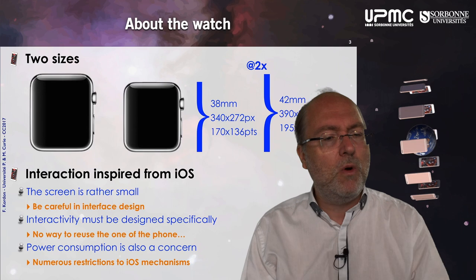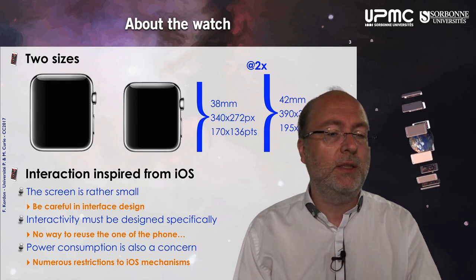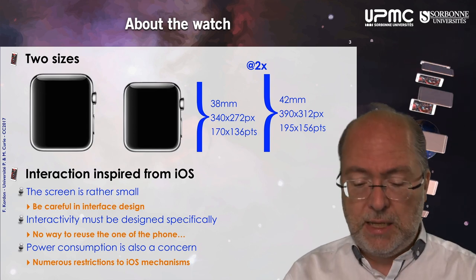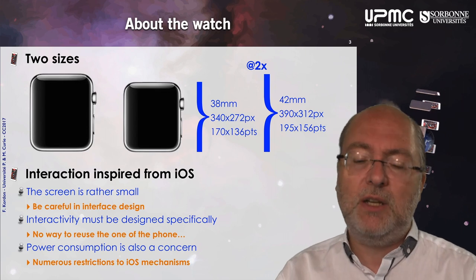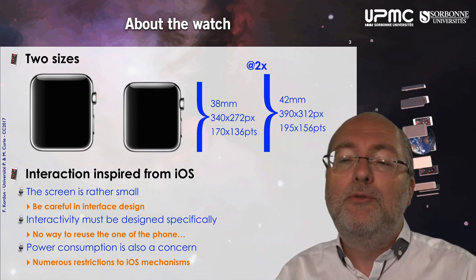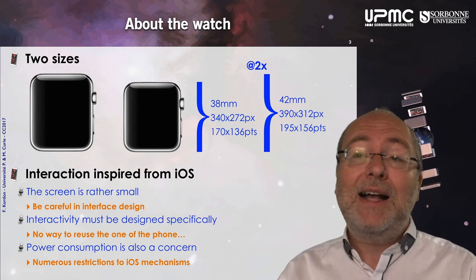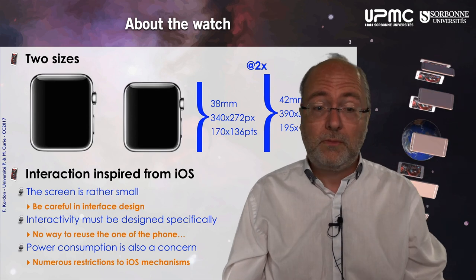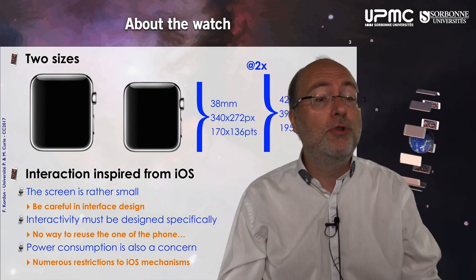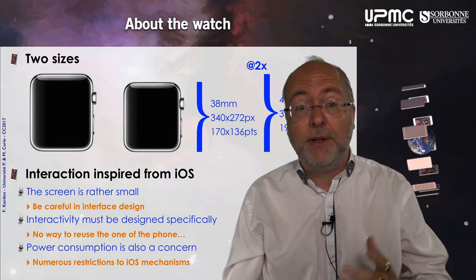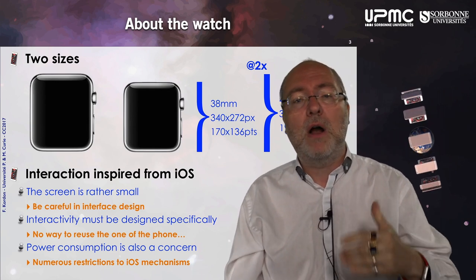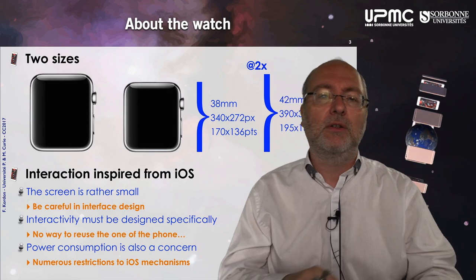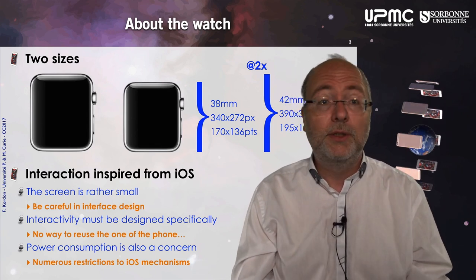The screen is much smaller than a phone, so you must be quite careful in the design of the interface. Apple forces you to respect some design guidelines. Interactivity must be designed specifically because you have elements like the digital crown that are different from a phone. Power consumption is also a huge concern, so there are many restrictions on iOS mechanisms. For example, when fetching a GPS position, you have specific modes dedicated to the watch — you just receive one position rather than constant updates, because constant updates consume too much CPU.